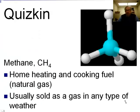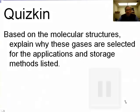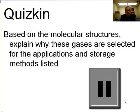And then this is methane. Methane is only a single carbon hydrocarbon, CH4. This is used for home heating and cooking fuel as well, but it's usually sold as a gas and it can be piped around, transported above or below ground in pipes in any type of weather. Now, thinking about those structures, what I'd like you to do is answer this question. Based on those molecular structures, why would each of these gases be selected for the applications and storage methods that we saw above?